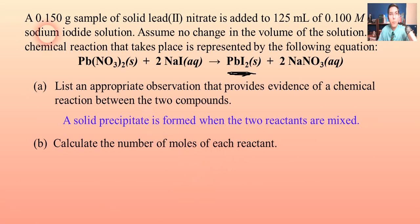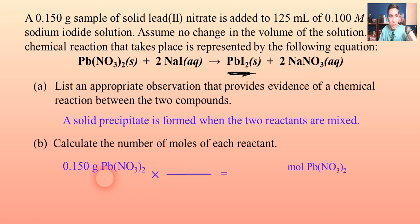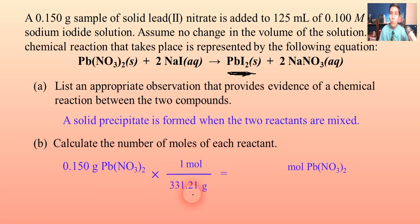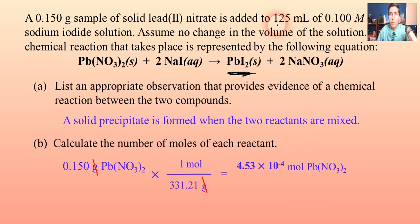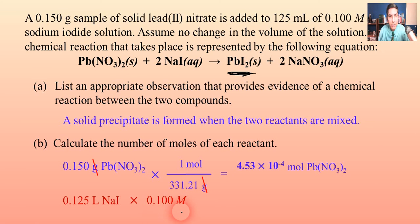Part B: calculate the number of moles of each reactant. For the 0.15 grams of lead(II) nitrate, we do a simple grams-to-moles conversion — grams on the bottom, moles on top. The molar mass is one lead at 207.2, two nitrogens at 14 each, and six oxygens at 16 each, totaling 331.21 grams per mole. Dividing gives about 4.53 × 10⁻⁴ moles of lead(II) nitrate. For the sodium iodide: 0.125 liters times 0.1 molar gives 0.0125 moles of sodium iodide.